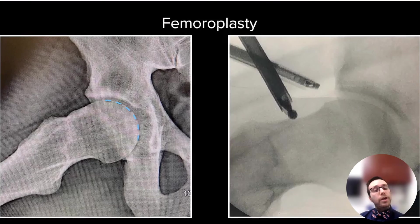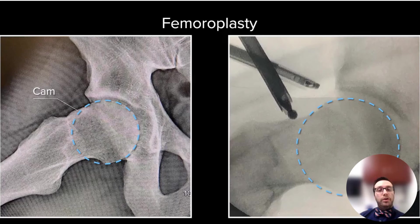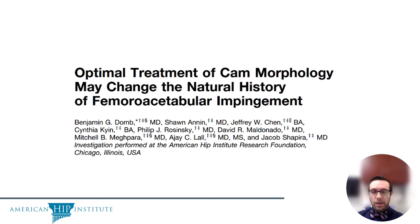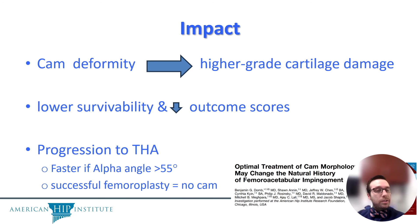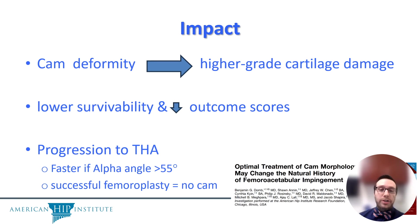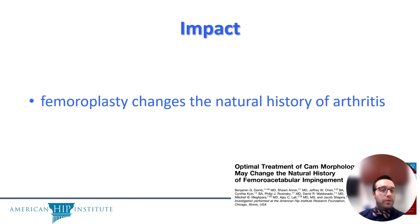Take a look at the image on the left — it shows a patient before surgery with a large cam deformity of the femoral neck. On the right side, we have the same patient after surgery with a complete resection of the deformity. In an investigation carried out at our institution, we were able to show that large cam deformities lead to higher-grade cartilage damage, lower survivability, and poor outcome scores. Patients with an alpha angle larger than 55 degrees had a faster progression to arthritis and conversion to total hip replacement. We were able to show that a successful femoroplasty — resection of the cam — is the same as having no cam at all, proving that femoroplasty changes the natural history of arthritis and can prevent and slow its progression.